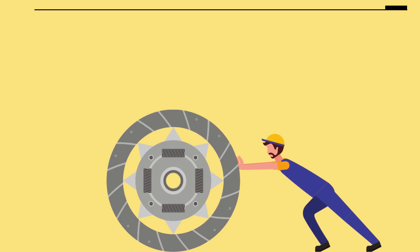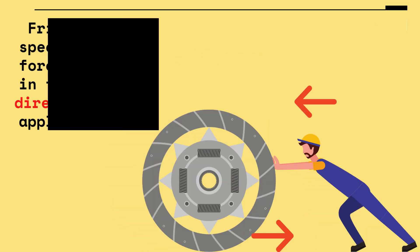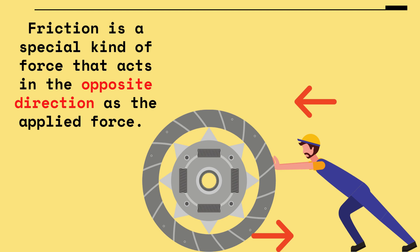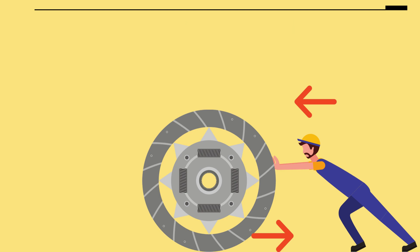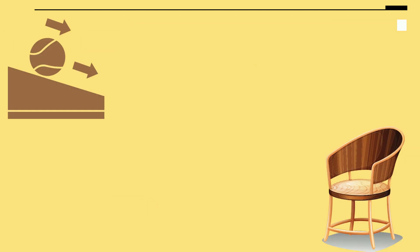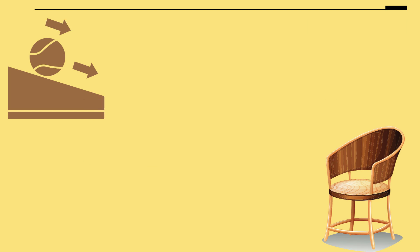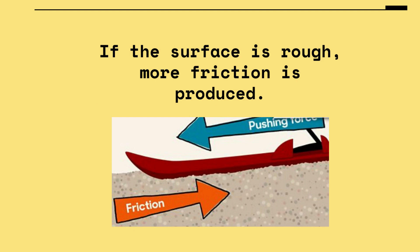Now let's look at another type of force. There are other forces that act on an object when you push or pull it. One of these is called frictional force. Friction is a special kind of force that acts in the opposite direction of the applied force, making the object resist movement. The amount of friction depends on the kind of surface — if the surface is smooth, less friction is produced; if the surface is rough, more friction is produced.